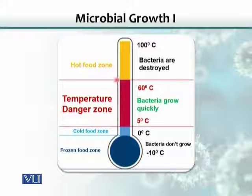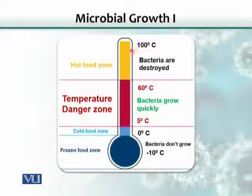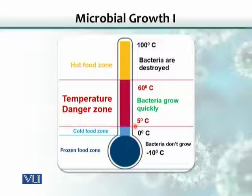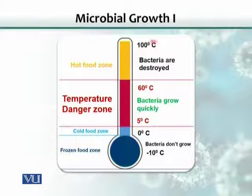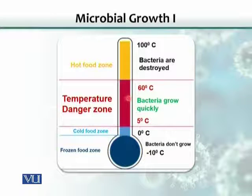The temperature range for preserving food: above 60 degrees Celsius is good for food preservation, as mesophilic pathogenic bacteria do not grow there. Keeping food below 5 degrees Celsius or above 60 degrees Celsius is a safe zone. The zone between 5 and 60 degrees Celsius is a dangerous zone where bacteria can grow and spoil food.